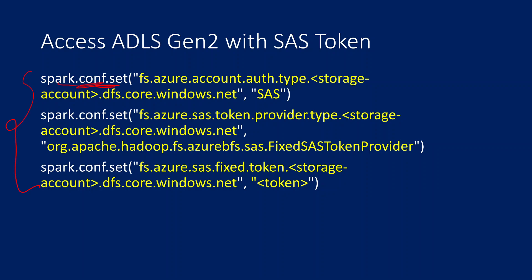The spark.configuration.set function will help you set some configuration on the cluster to access storage. Please watch my previous videos where I discussed how to access a storage account using an account key and service principal, as similar code was used there. For the SAS token, the first key is: fs.azure.account.authentication-type.<storage-account-name>.dfs.core.windows.net, and the value is SAS — telling the cluster we are going to use the SAS token protocol to connect with storage.